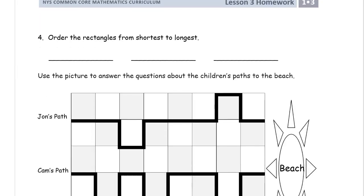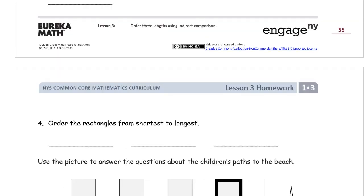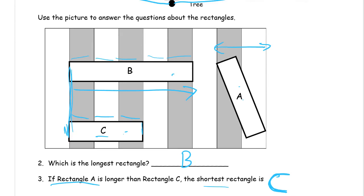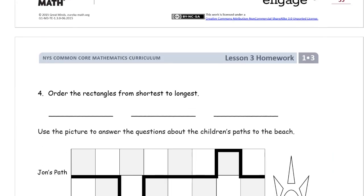And then we have to order the rectangles from shortest to longest. So shortest one first and longest one last. Shortest one is C, the longest one is B, and A is in the middle. So it's going to go from C, A in the middle, and B is the longest.